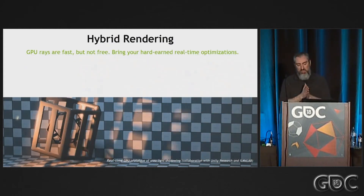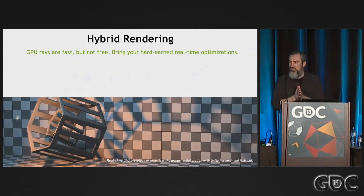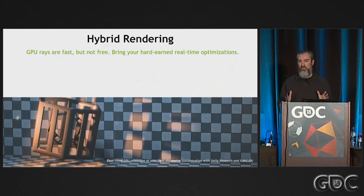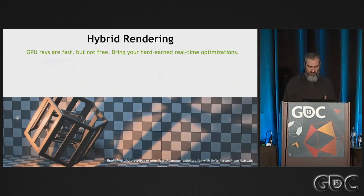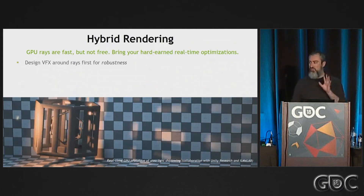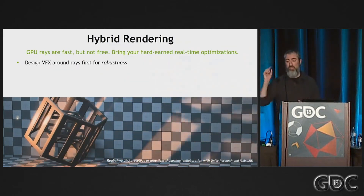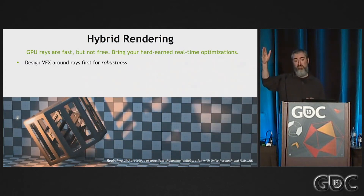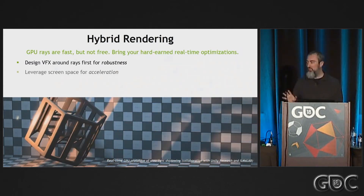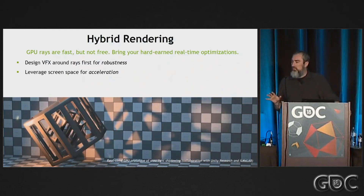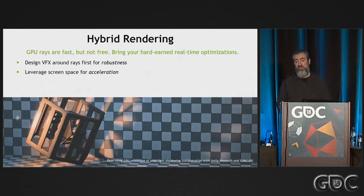The general hybrid rendering strategy is straightforward: think rays first. The rays are really fast, but they're not free. So first you design your algorithm based around rays — a shadow is a place where you cast a ray and it can't hit the light. But then you step back and say, well, I still have a lot of optimization I can bring in from raster techniques, from existing real-time rendering techniques.